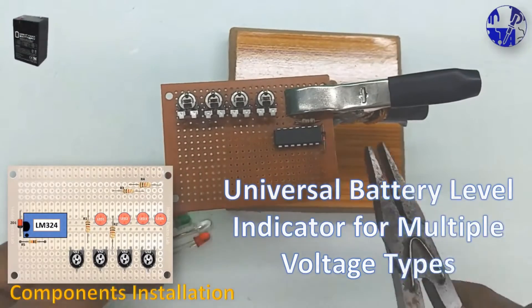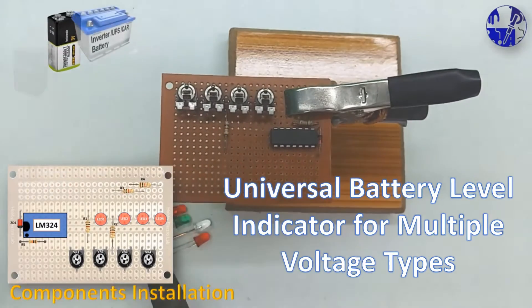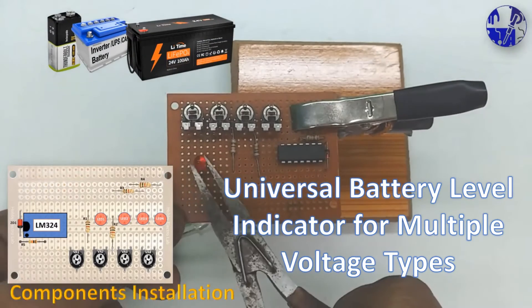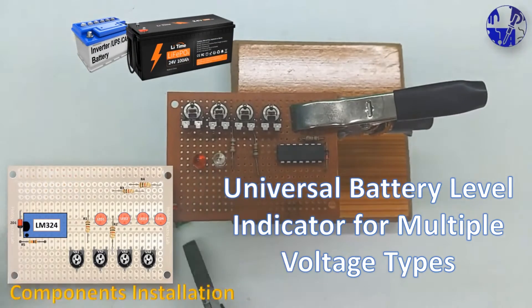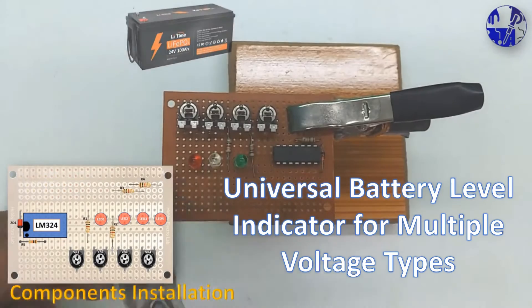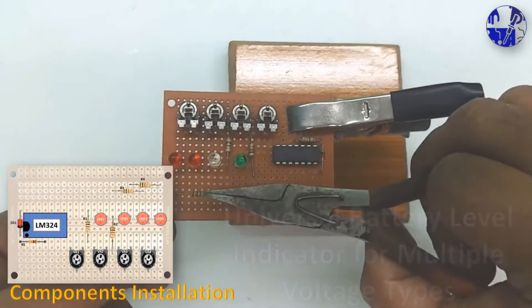This universal battery level indicator design accommodates 6V, 9V, 12V, and 24V batteries. Simply adjust the voltage settings using the four variable resistors in the circuit for each battery type.